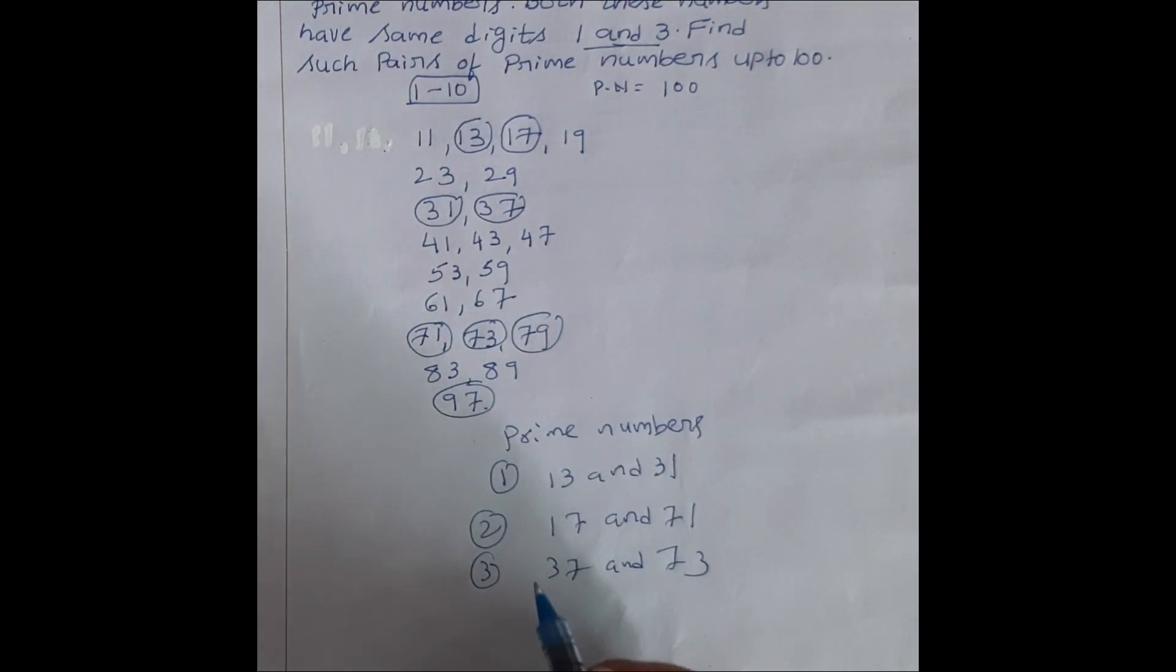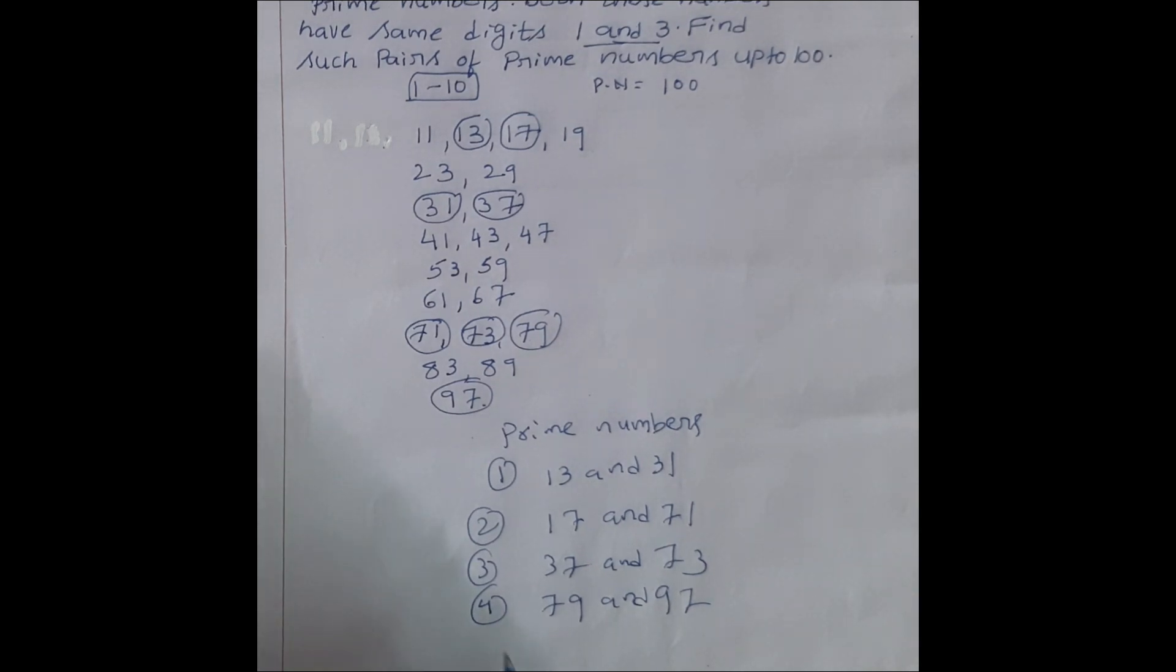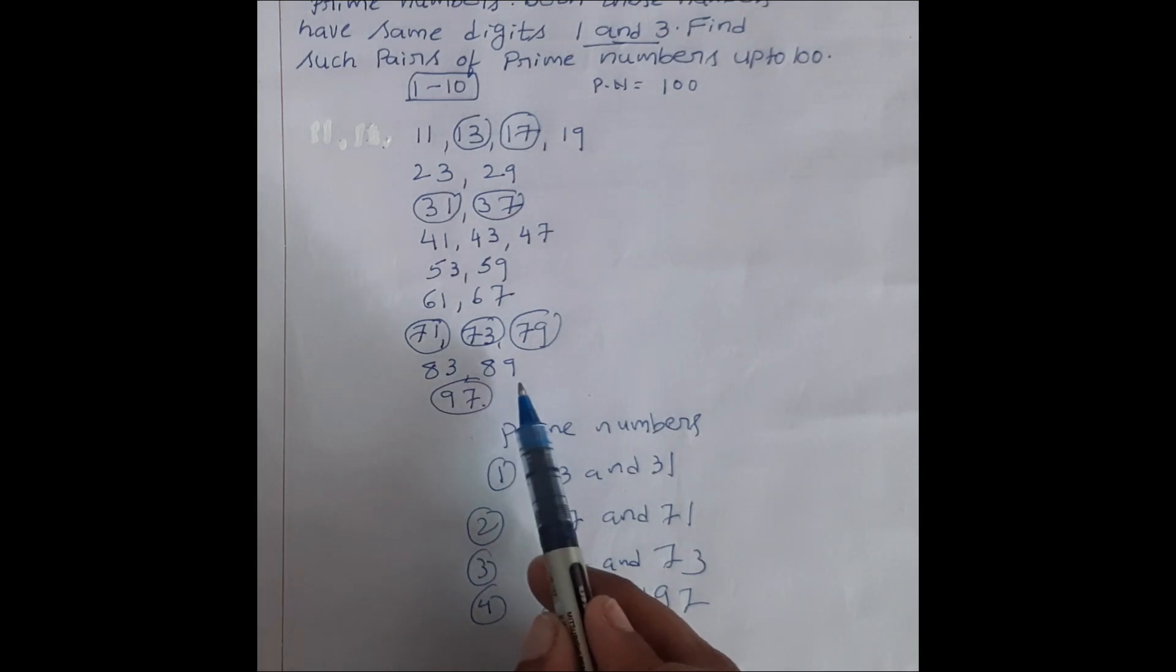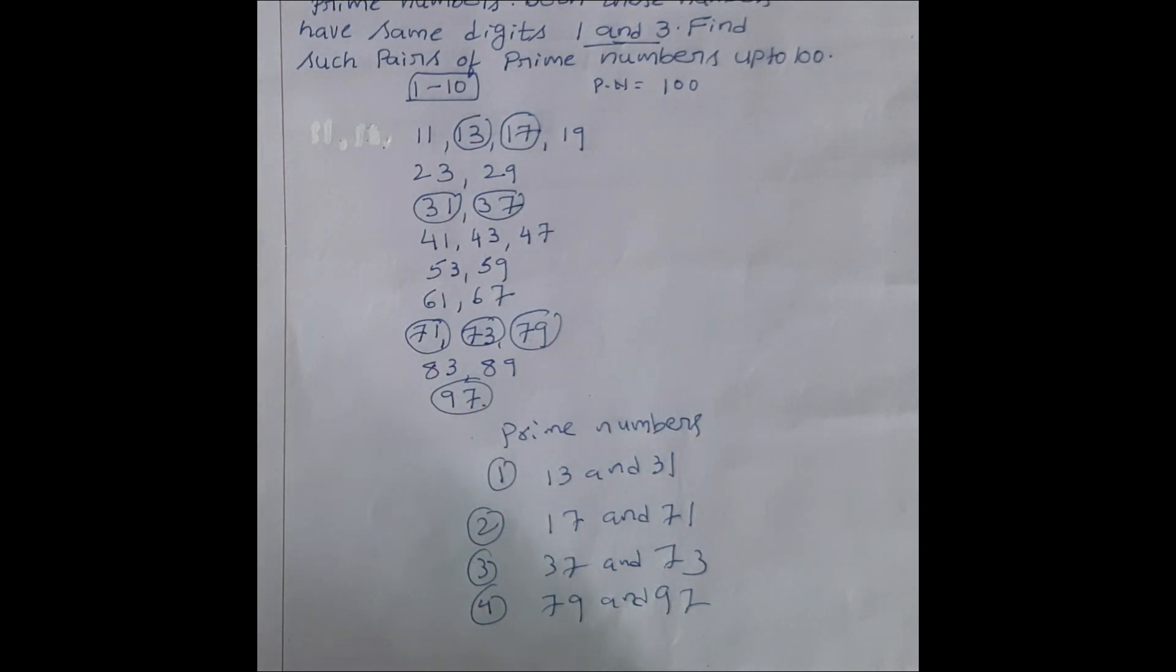79 and 97, same numbers hai, position alag-alag hai. So, next 83, 83 means 38, 38 nahi hai. 89, 98, 98 ho bhi nahi hai.